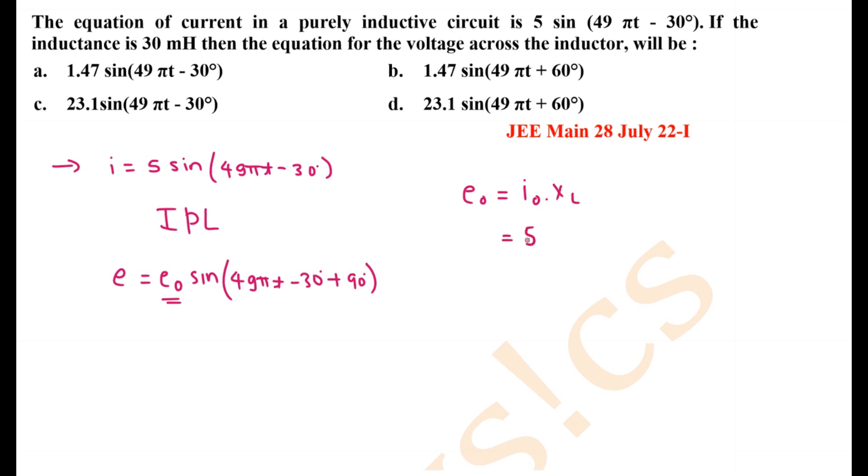What is I0? I0 is 5. What is XL? XL is omega L. What is omega? 49 pi. Into L, where L is given as 30 mH.